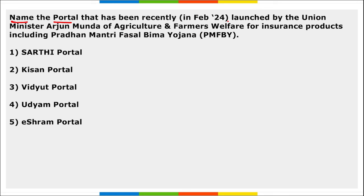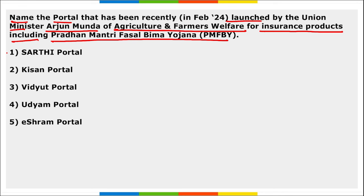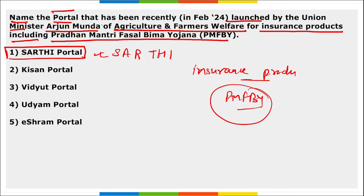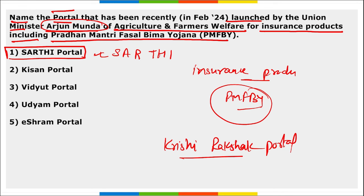Name the portal recently launched by Union Minister Arjun Munda of Agriculture and Farmers Welfare for insurance products including Pradhan Mantri Fasal Bima Yojana. It is the SARATHI portal — SARATHI stands for Sandbox for Agriculture and Rural Security Technology and Insurance. This portal will offer a wide range of insurance products. Apart from this, Arjun Munda also launched the Krishi Rakshak portal and a helpline number 14447 to enable farmers to file their grievances.